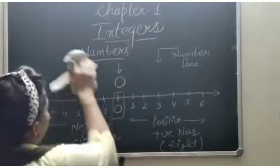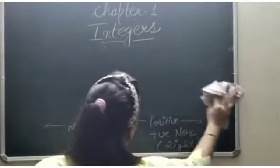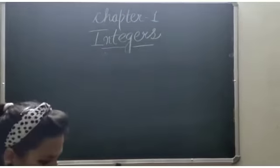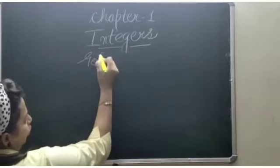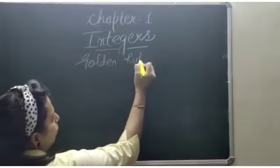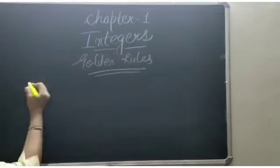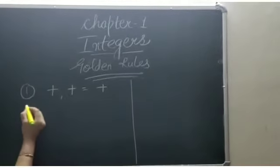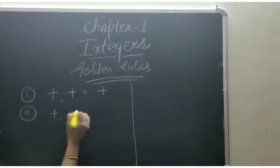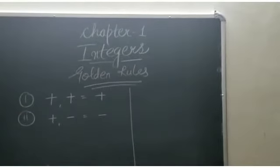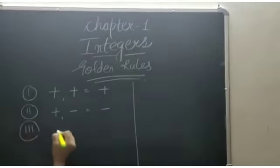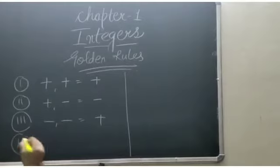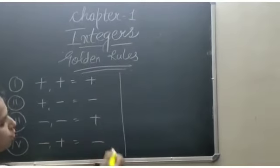Let's come to the next part: 4 golden rules. First one: plus plus is equal to plus. Second: plus minus is equal to minus. Third: minus minus is equal to plus. And the fourth one is minus plus is equal to minus.